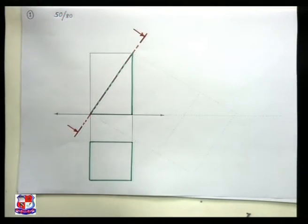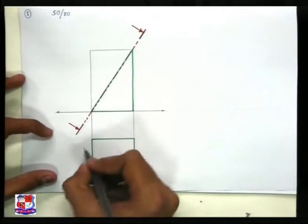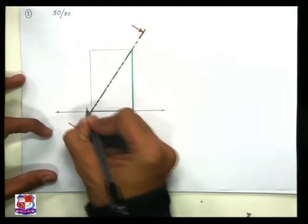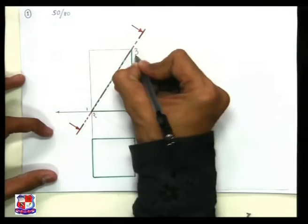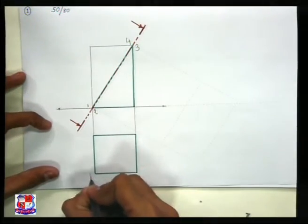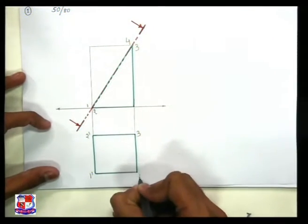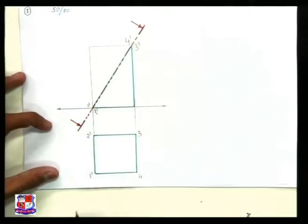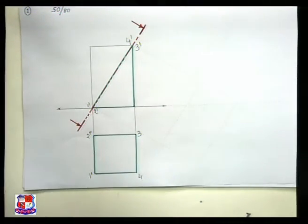Now we have to draw the sectional front view. For that, let me name the end points: here point number one, and two points would be there. So one, two, three, and four — four points are there. Accordingly, in the front view, one dash, two dash, three dash, four dash would be there, and in the top view one, two, three, four points would be there.